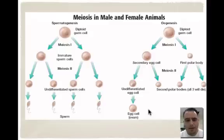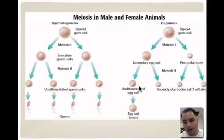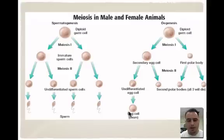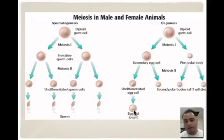Meiosis in males and females is very different. Same process, but in males it leads to four sperm. In females, you would think you'd get four eggs, but actually three of the soon-to-be eggs end up being polar bodies — they die. They sacrifice their cytoplasm and cell machinery to give it to one cell, and that one becomes the egg cell. You want that cell to be very big compared to the sperm because the egg cell needs ribosomes, Golgi, ER, mitochondria, and all those structures to help it develop into a fetus.